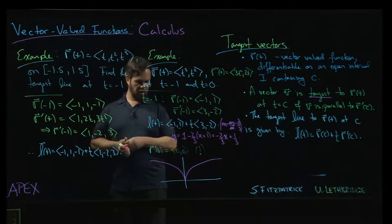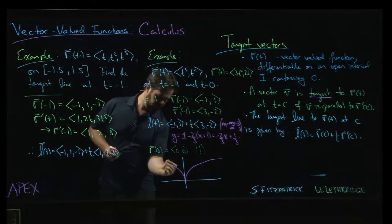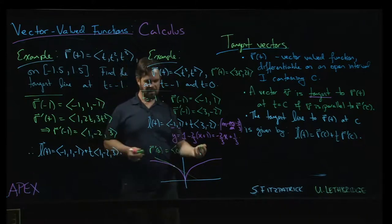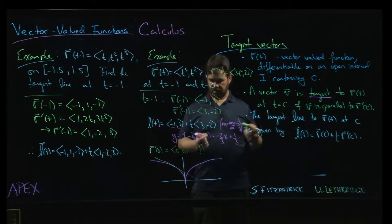Whereas at minus 1, that's going to be, you know, kind of over here somewhere. There's no problem with the tangent line at that point, right? But at the origin, tangent line is undefined.